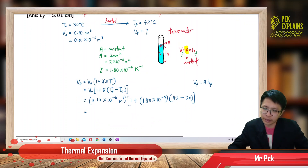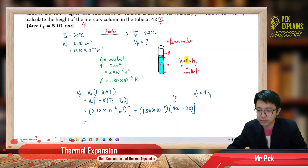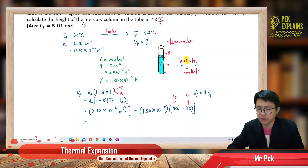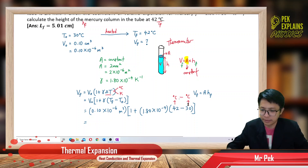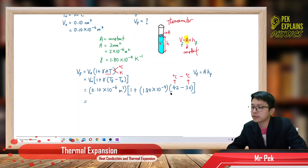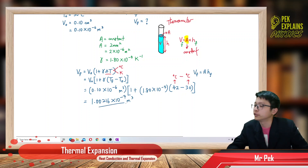Another thing: for the change in temperature, you can maintain it in degrees Celsius — no need to change to Kelvin. You can use degrees Celsius minus degrees Celsius; you still get the same change in temperature, even if you convert to Kelvin. So just put degrees Celsius minus degrees Celsius. After we calculate, the final volume is 1.00216 × 10⁻⁷ m³. That's our final volume.